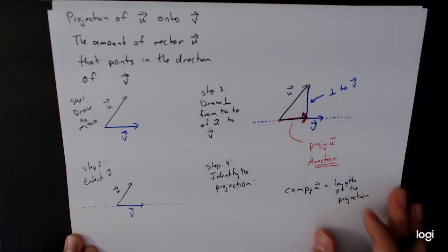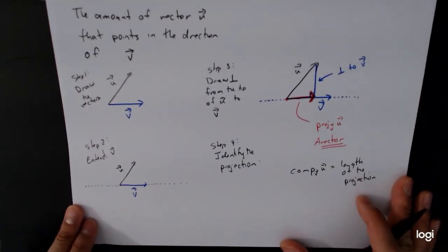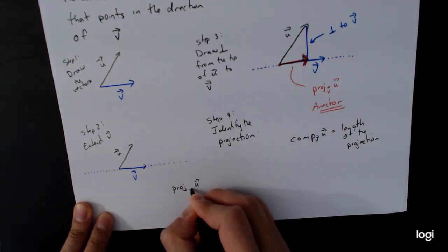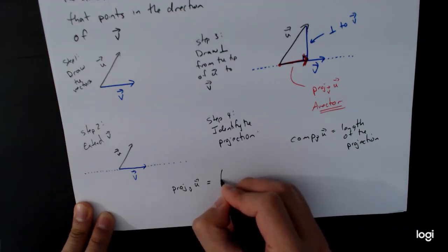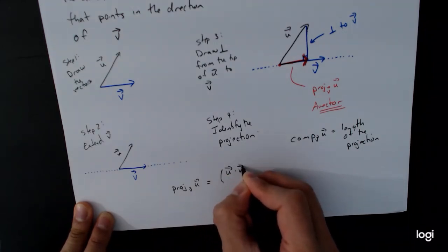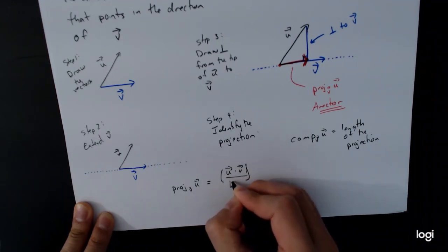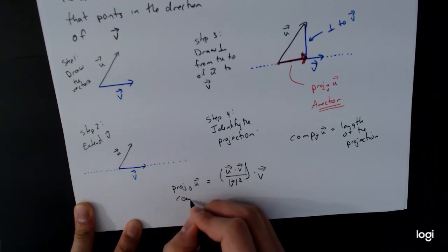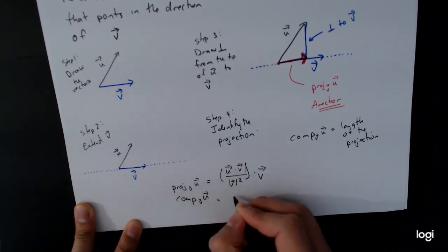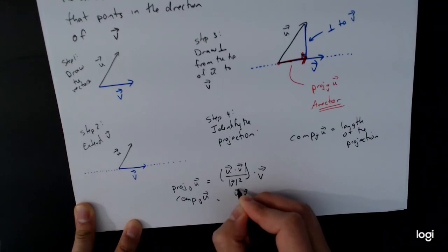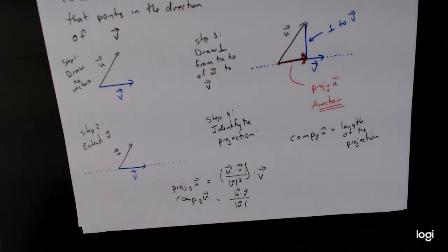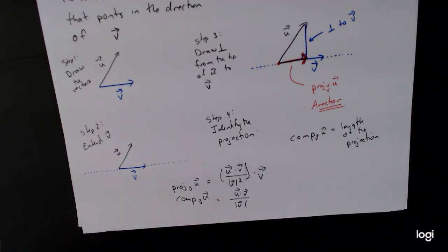There is a formula for these things. The projection of u onto v equals u dot v divided by the length of v squared, times the vector v. And its length — the component — is just u dot v divided by the length of v. Importantly, this is the projection of u onto v; if you reversed it and projected v onto u, you would get a different picture and a different result.